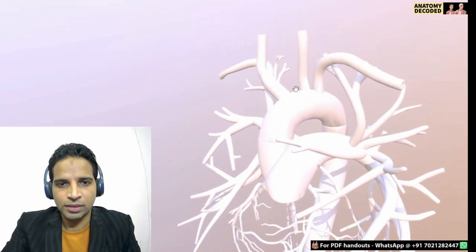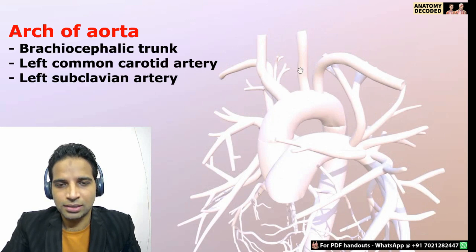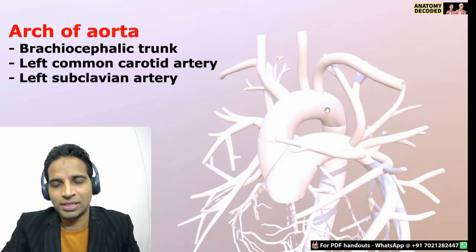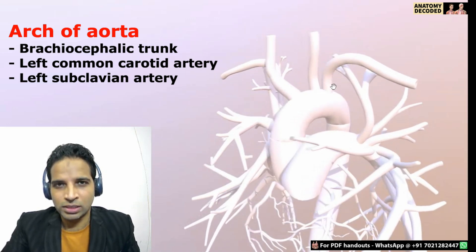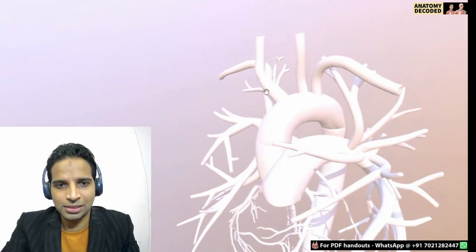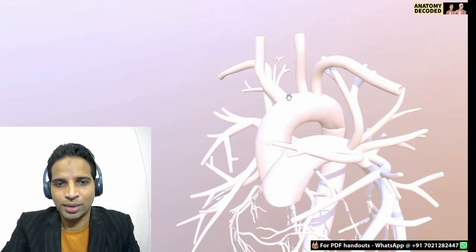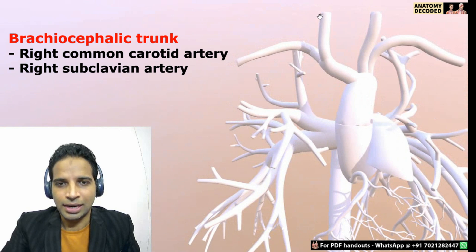From the arch of aorta, three major branches in order: the first branch is the brachiocephalic trunk, then the left common carotid artery, and then the left subclavian artery. The brachiocephalic trunk is much larger in diameter compared to the other two arteries, and it divides into the right common carotid artery and the right subclavian artery.